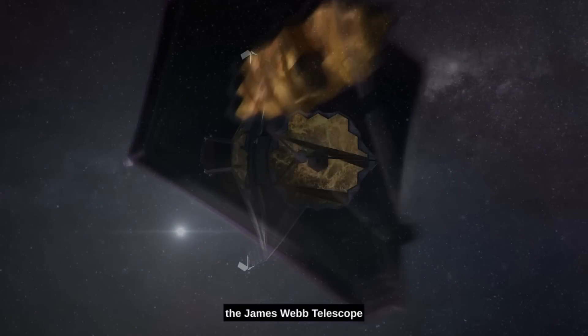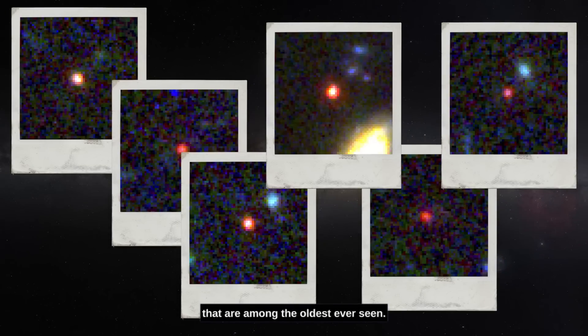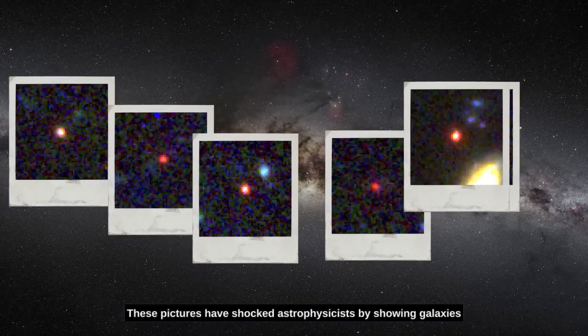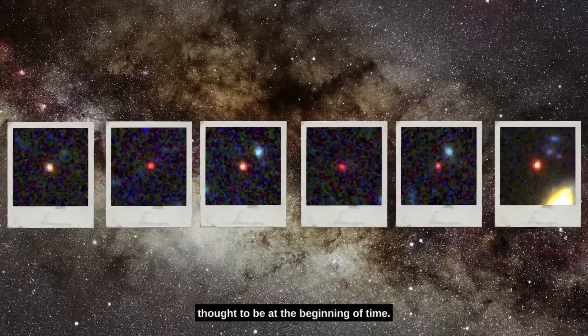In a recent breakthrough, the James Webb Telescope has captured images of six galaxies that are among the oldest ever seen. These pictures have shocked astrophysicists by showing galaxies that are much more developed than they were thought to be at the beginning of time.